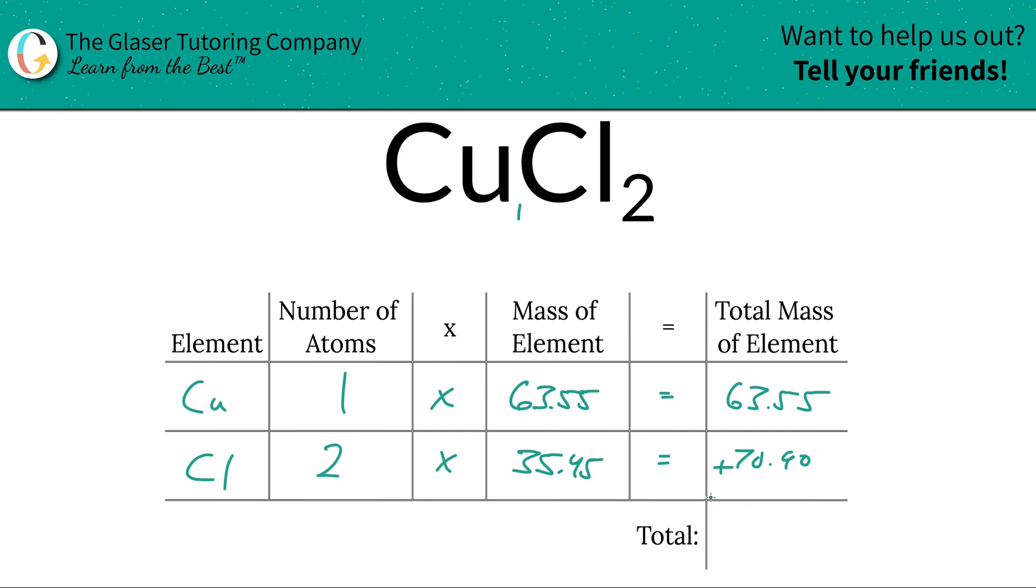And then to find the total mass of the compound, so simple, now just add these two values together. And it works out to be 134.45. Since we're solving for molar mass, the units here are in gram per mole. And that's all there is to it. The table provides a nice little structure here, makes it very simple to calculate.